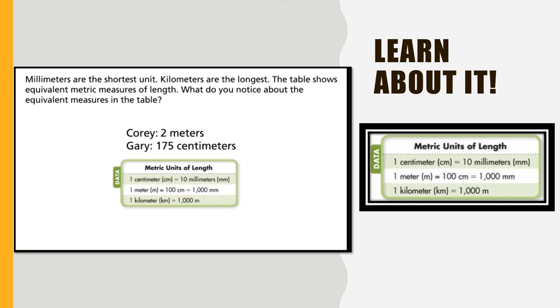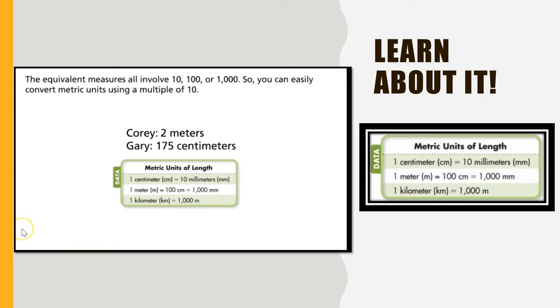The table shows equivalent metric measures of length. What do you notice about the equivalent measures in the table? Equivalent measures all involve 10, 100, or 1,000. So you can easily convert metric units using a multiple of 10.